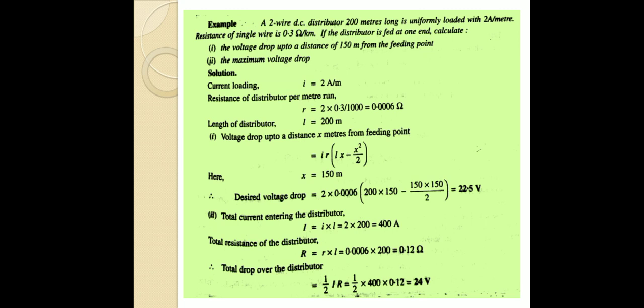For number 1, the voltage drop up to a distance of x meters from the feeding point uses the formula: voltage drop equals IR into (Lx minus x squared by 2). Here x equals 150 meters. Substituting: 2 into 0.0006 into (200 into 150 minus 150 squared by 2), which gives 22.5 volts.